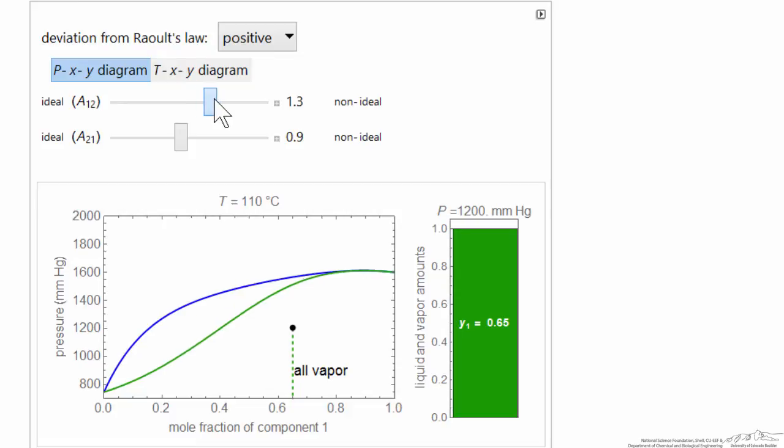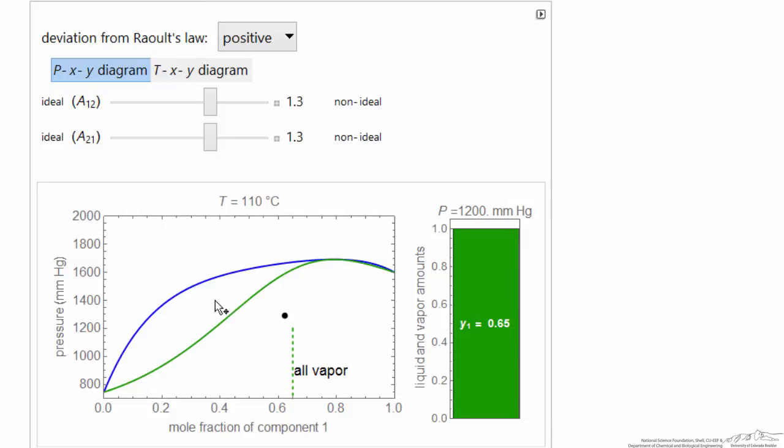If I make this non-ideal enough, we start seeing that now it's clear we have an azeotrope present. I can move this black dot, and the bar graph then reflects the distribution between liquid and vapor.